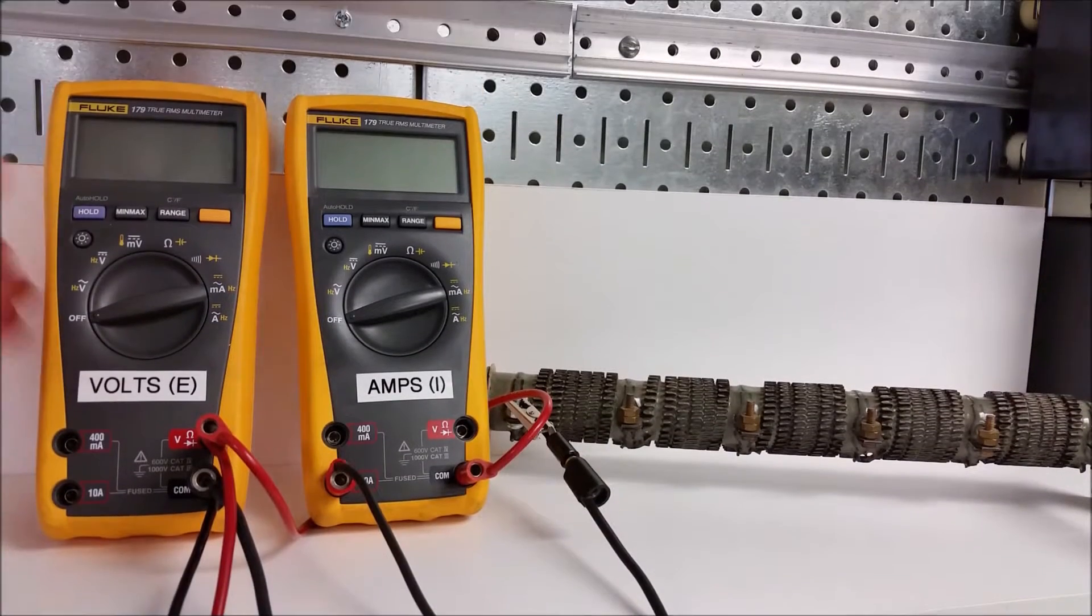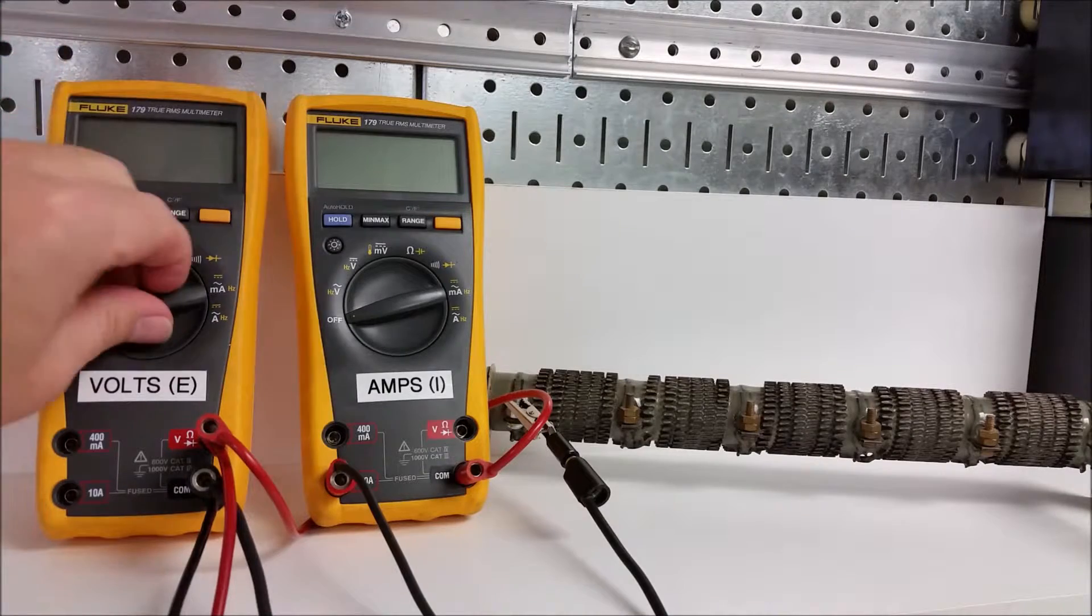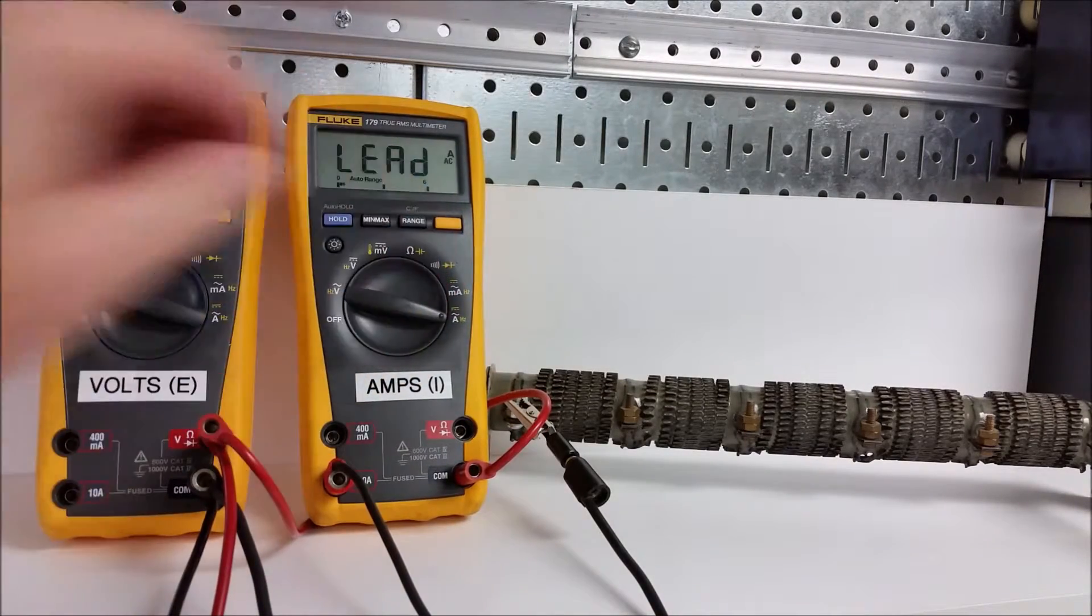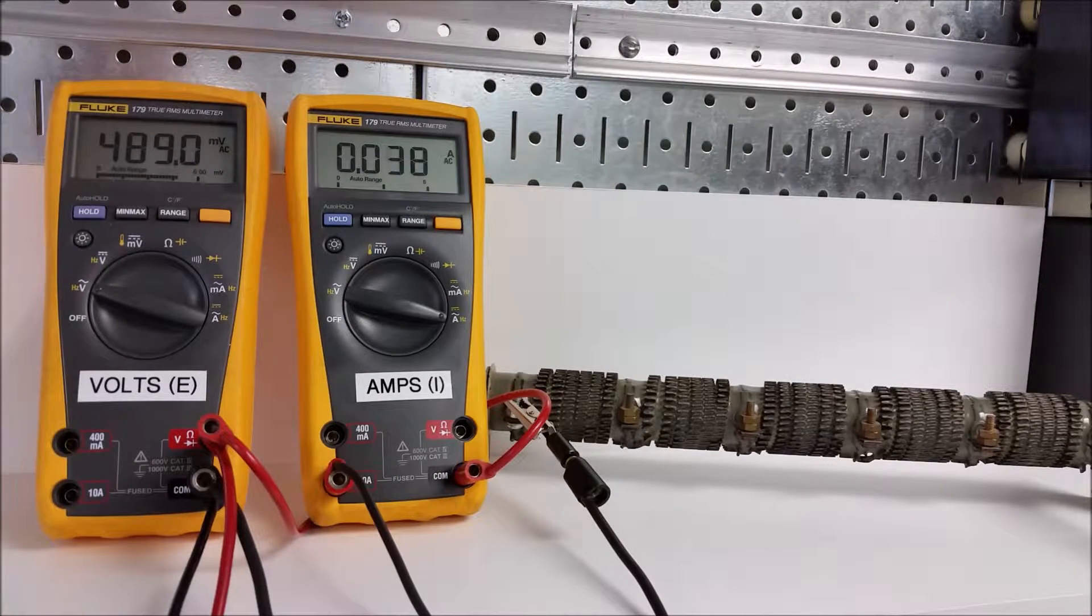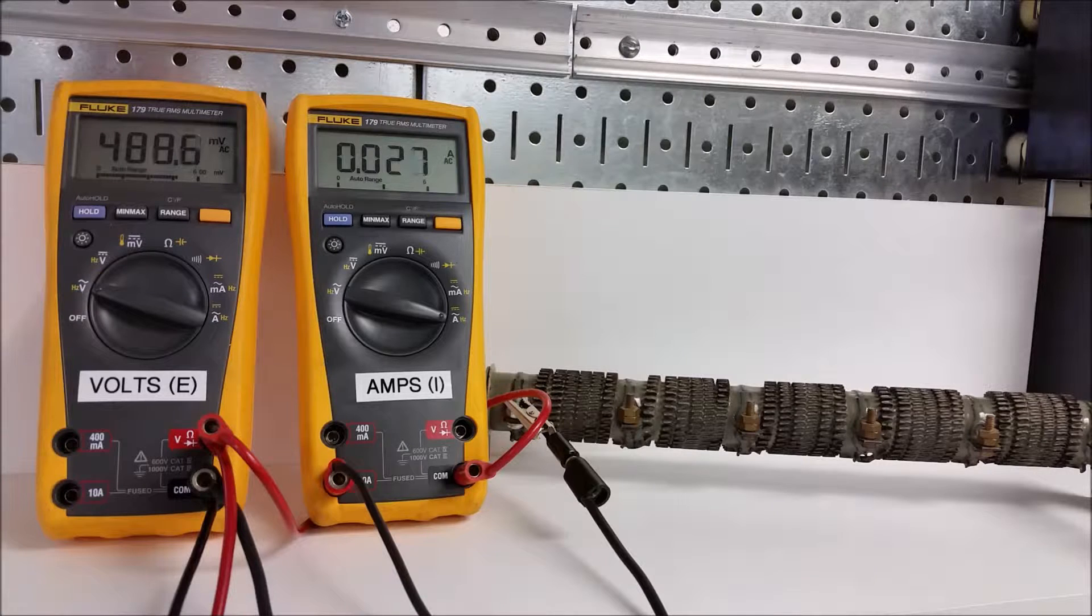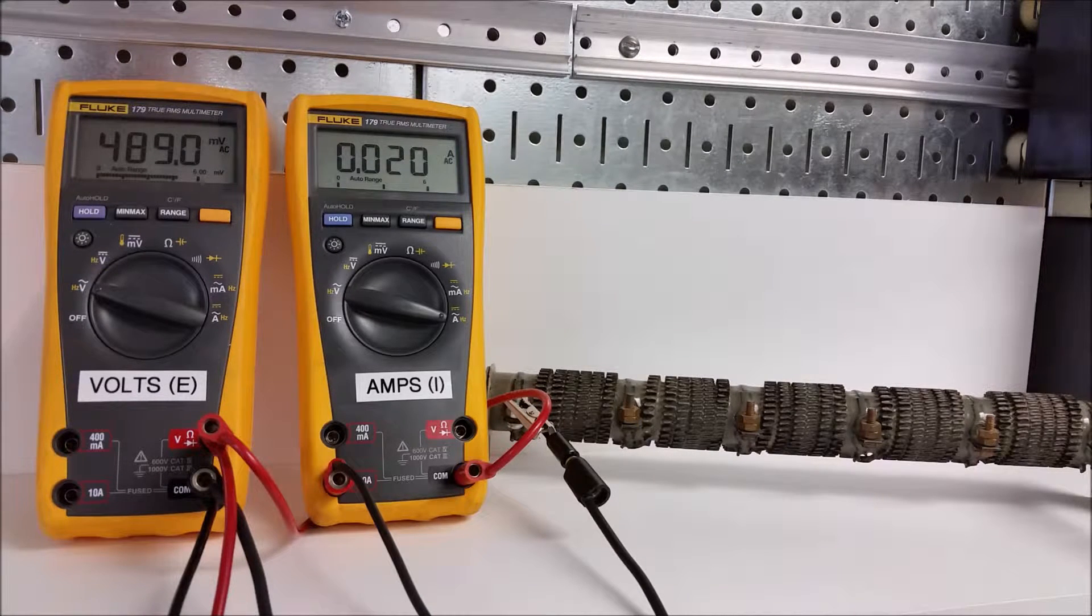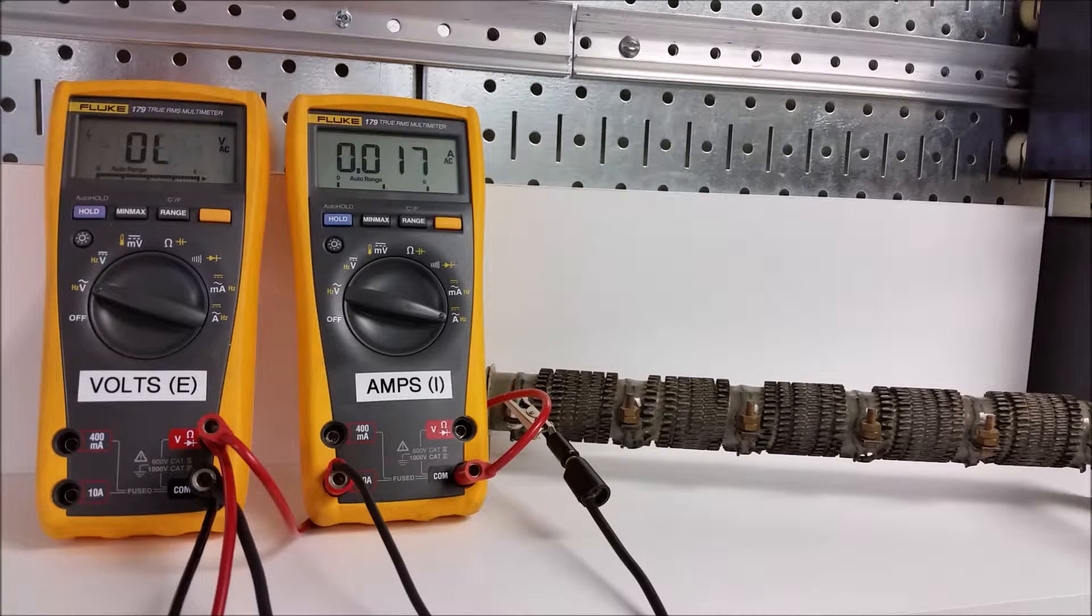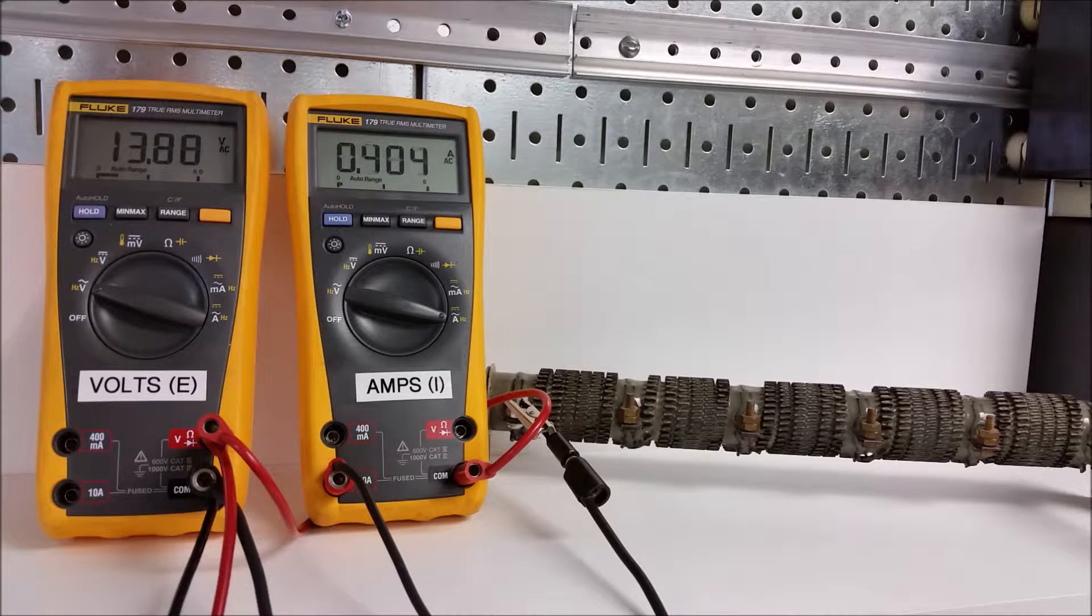So we have our metering set up so that we can measure volts on the left-hand side, amps on the right-hand side. Let's turn that on. And I also have a variable power supply that allows me to step up the voltage from zero volts on up. And what we'll do is we'll measure voltages and currents based in 20-volt increments.